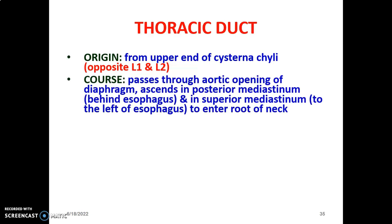The thoracic duct begins in the abdomen and passes through the aortic opening at T12 to enter the thorax. It passes through the aortic opening together with the aorta and the azygos vein, and ascends in the posterior mediastinum.